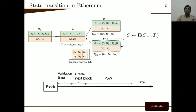Each node in Ethereum, after receiving a transaction, stores it in a data structure called the transaction pool. After receiving a block, the node validates it by executing all the transactions enclosed in it and updating the state. Following validation, the node creates the next block, for which it selects a subset of transactions from the transaction pool based on certain criteria. For example, in this diagram the node has validated block BI and created block B-I+1.